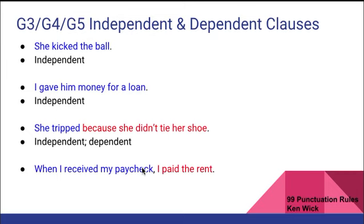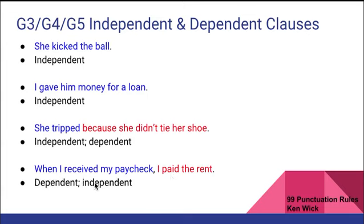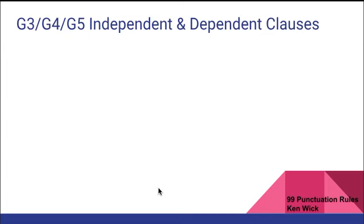'When I received my paycheck, I paid the rent.' Here we have two clauses. The first clause has a subject and a verb and starts with a subordinating conjunction, therefore it is a dependent clause. 'I paid the rent' has a subject and verb and does not begin with a subordinating conjunction, therefore it is an independent clause. So: dependent, independent.